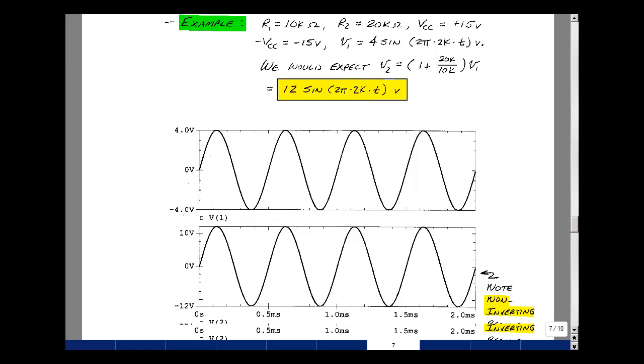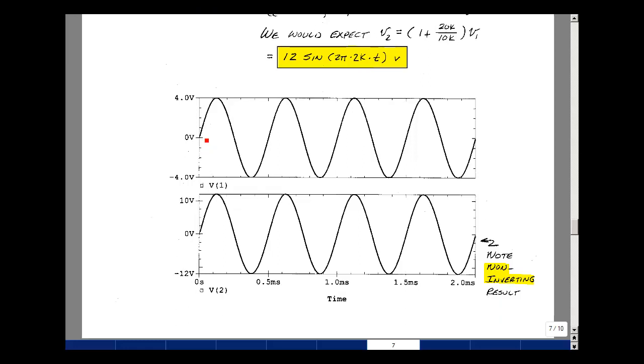So here's a graph of what you would see in lab. So the input's going to go up from 0 to 4 volts, back down to minus 4, and so on repeat itself. The period is 1 over 2k, and that's half a millisecond.